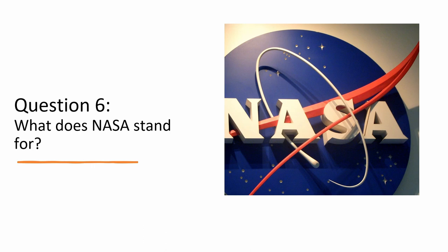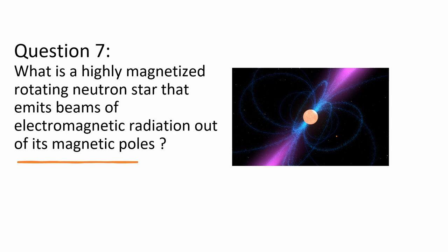Question number seven: what is a highly magnetized rotating neutron star that emits beams of electromagnetic radiation out of its magnetic poles? And the answer is a pulsar.